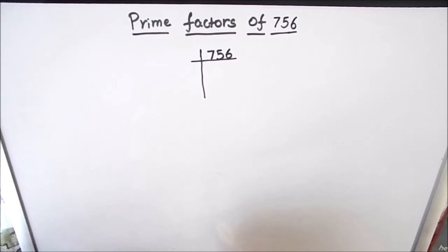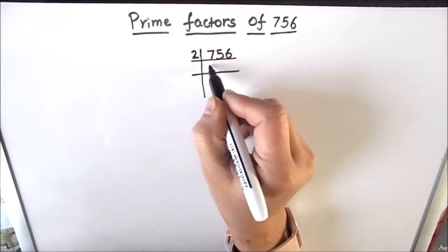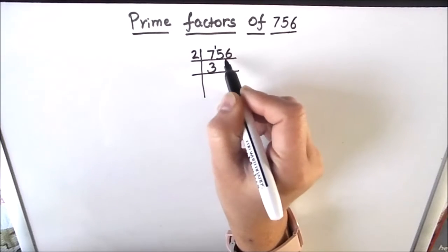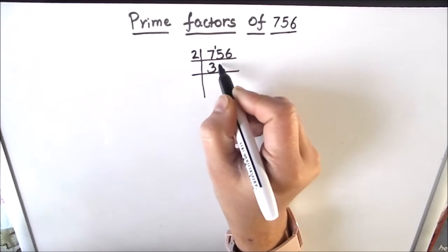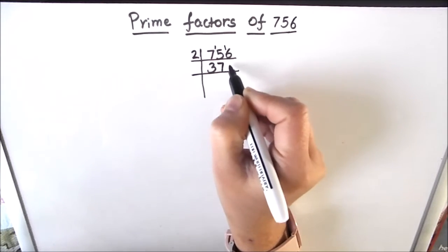So let's divide 756 by 2. 2 times 3 is 6, 1 is remainder, this becomes 15. 2 times 7 is 14, 1 is remainder, this becomes 16. 2 times 8 is 16. Now again we can divide 378 by 2. 2 times 1 is 2, 1 is remainder, this becomes 17.